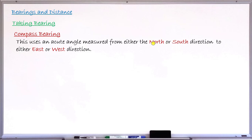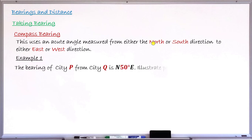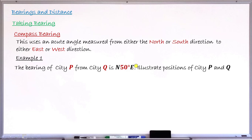Let's take Example 1. It says: the bearing of CTP from CTQ is given. Look at the angle in the middle of the two directions — north and east. The angle is 50 degrees. So this bearing is now read as 50 degrees north of east, or N50°E.